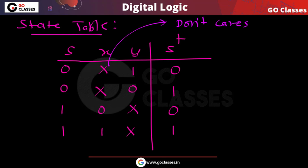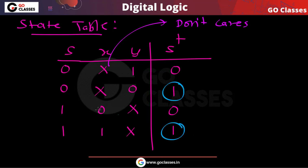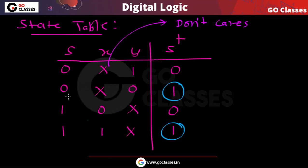Now from this state table you can write the state equation. You can create a K-map for S-plus, since S-plus is a function of three variables: current state S and inputs X, Y. S-plus is 1 when S is 0 and Y is 0 — we don't care about X — and S-plus is also 1 when S is 1 and X is 1. In both these situations S-plus will definitely be 1.